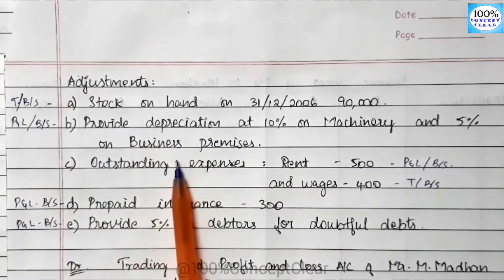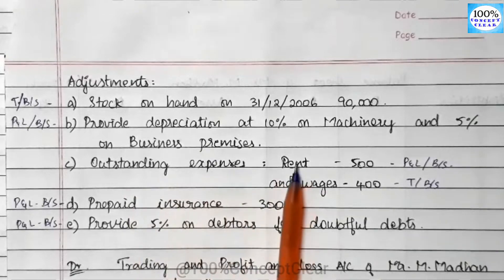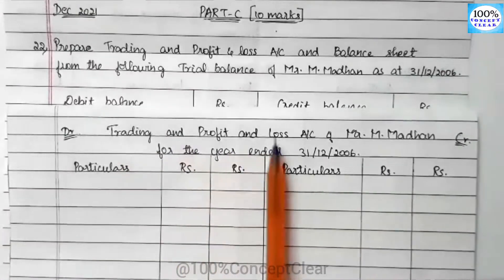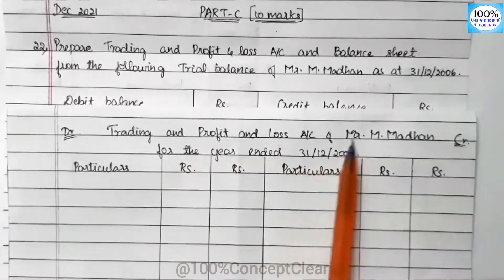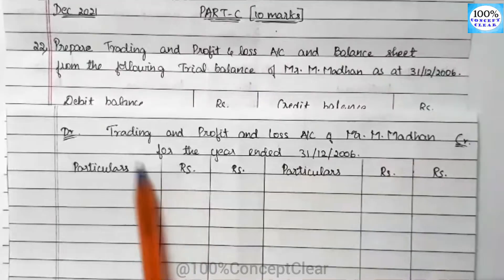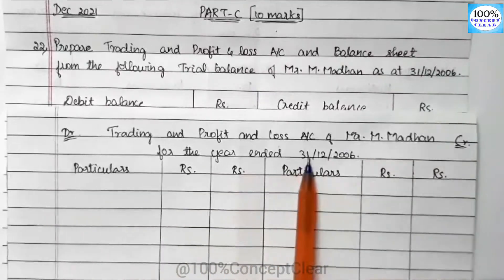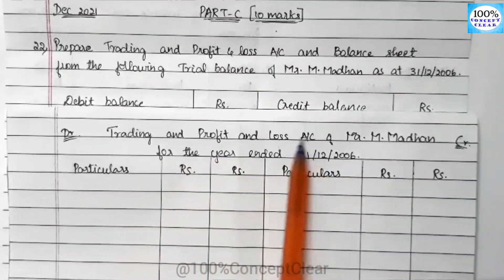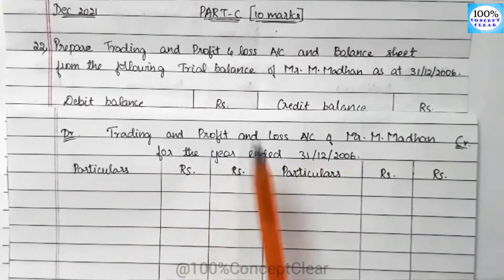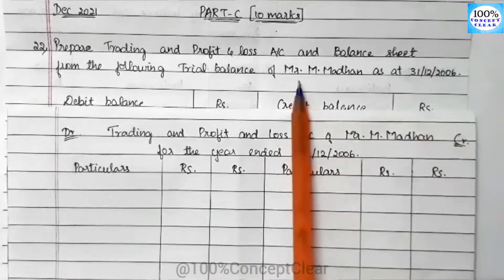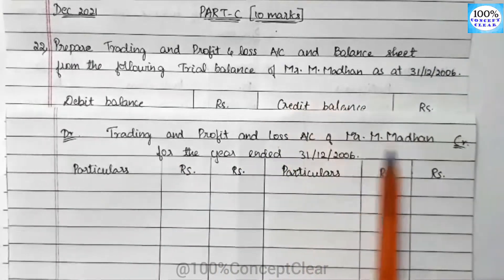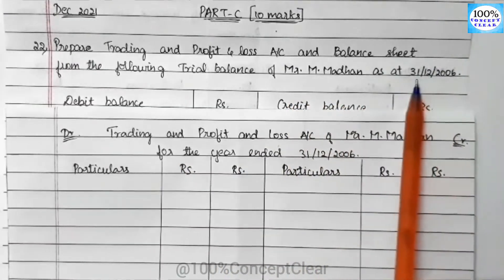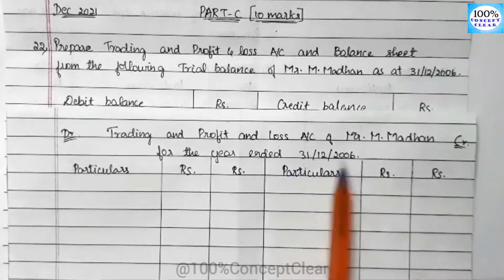Now we will open the Trading and P&L account. Trading and Profit and Loss account of Mr. M for the year ended 31-12-2006.